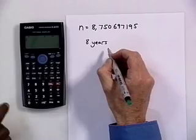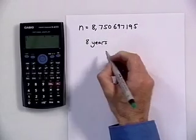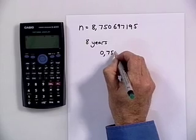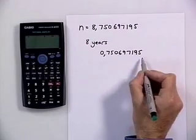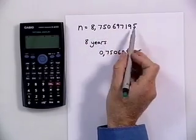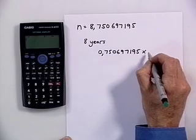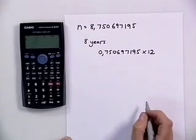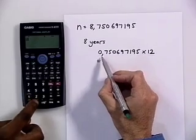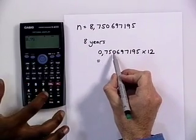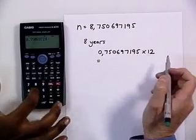Put the number in the calculator. Take the decimal, 0.75069719. We've got this decimal that comes after the eight. It's not a whole number but we can visualize it as a fraction of the 12 months. If you multiply this, plug that number in: 0.75069719 multiplied by 12.